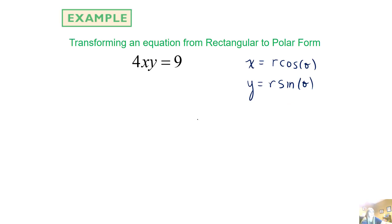And y equals r sine theta. So where I see an x, I'm going to plug in r cosine theta. And where I see a y, I'm going to plug in r sine theta. So that's all I've done. Of course, r times r is r squared. So 4 r squared cosine theta sine theta equals 9.